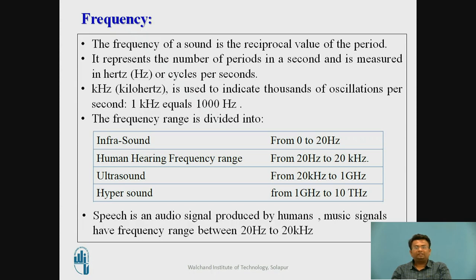The frequency ranges are divided into: infrasound, which varies from 0 to 20 Hz; the human hearing range, from 20 Hz to 20 kHz; ultrasound, from 20 kHz to 1 GHz; and hypersound, from 1 GHz to 10 THz. Speech and music signals have frequency ranges between 20 Hz and 20 kHz.